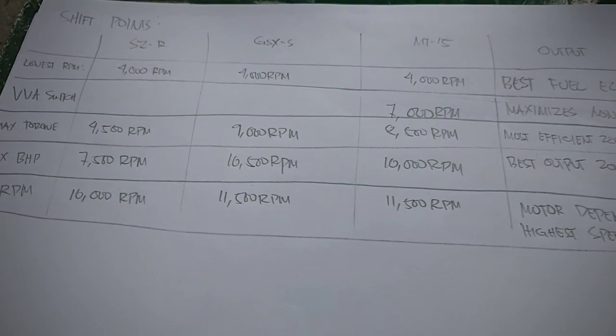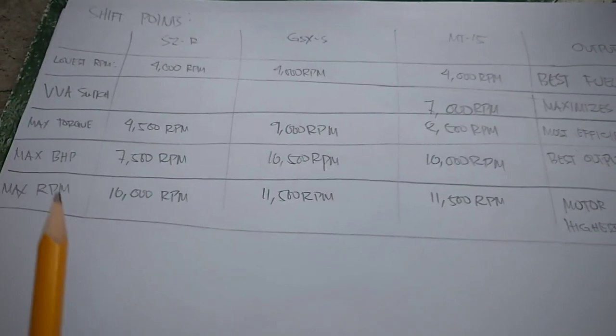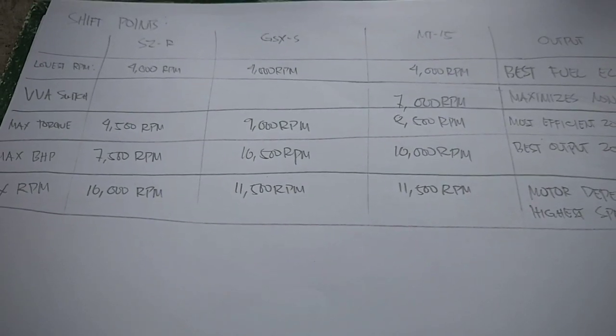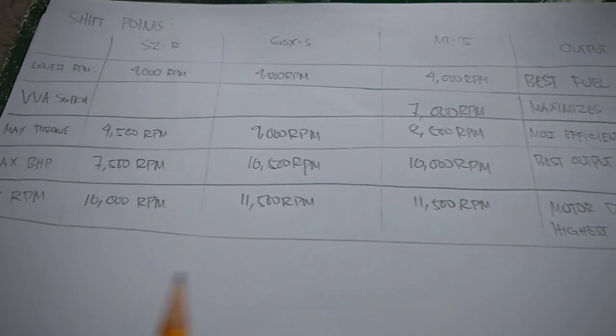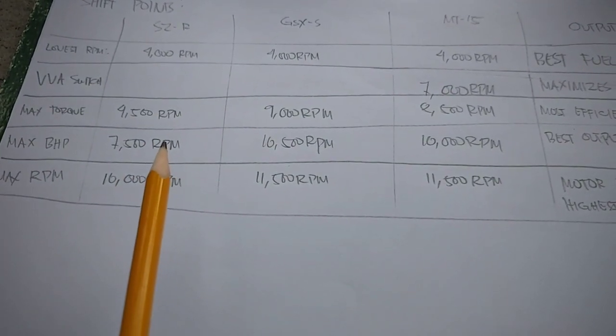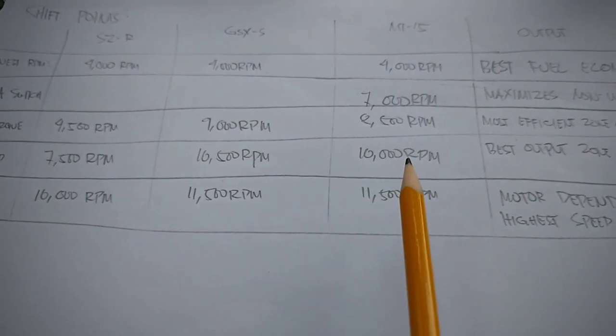As gearheads, we always have the need for speed. Of course, we also have the maximum horsepower kung kailan mag-shift dun sa gearbox mo. So para kay SZ, 7,500 RPM, kay GSX 10,500, kay MT-15 at 10,000 RPM.